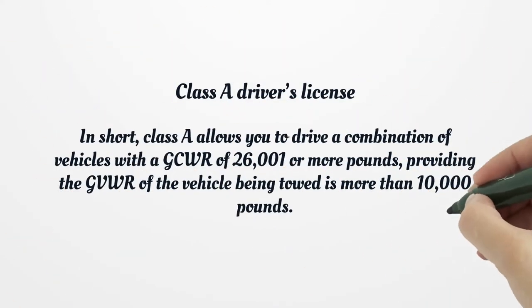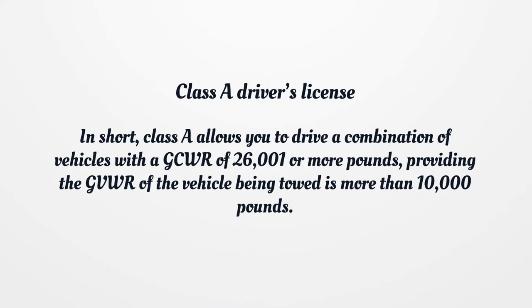Class A Driver's License allows you to drive a combination of vehicles with a GCWR of 26,001 or more pounds, providing the GVWR of the vehicle being towed is more than 10,000 pounds.